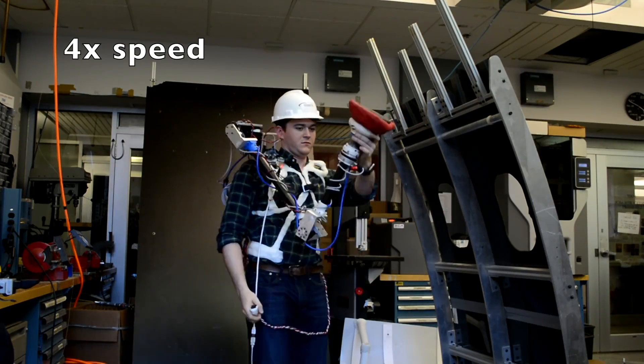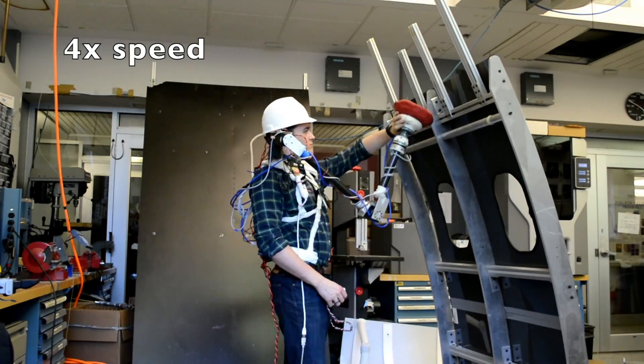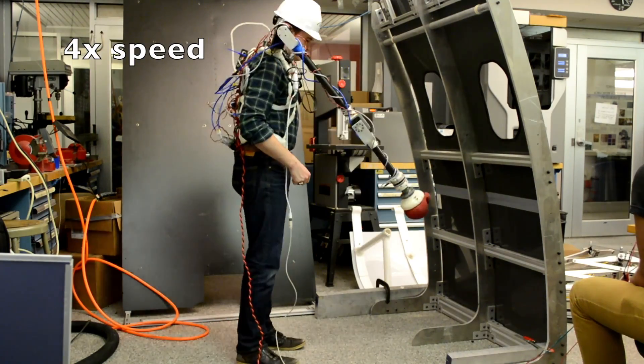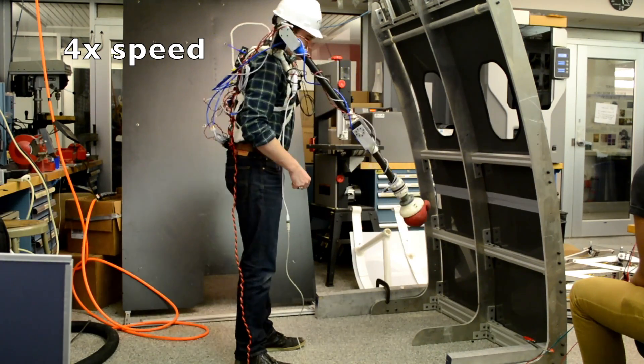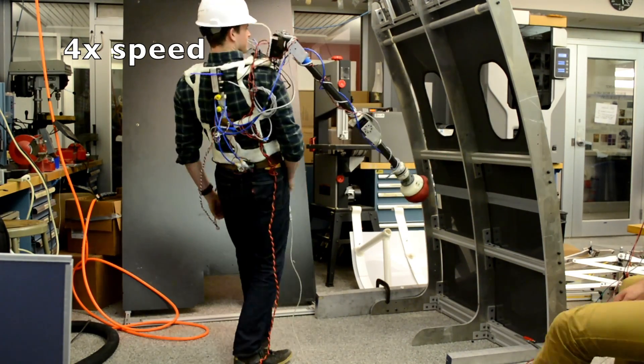The wearer moves the arm to a desired position and the motors in the joint hold it there. It even maintains the gripper's absolute position as the worker moves.